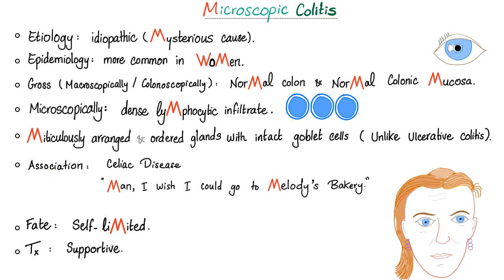Microscopic colitis is associated with celiac disease — I wish I could go to a bakery, but I cannot; I'm allergic to gluten, specifically gliadin. What's the fate of microscopic colitis? Thankfully, it is self-limited — it will go away on its own. Therefore, the treatment is supportive. Just keep calm and ride the wave.